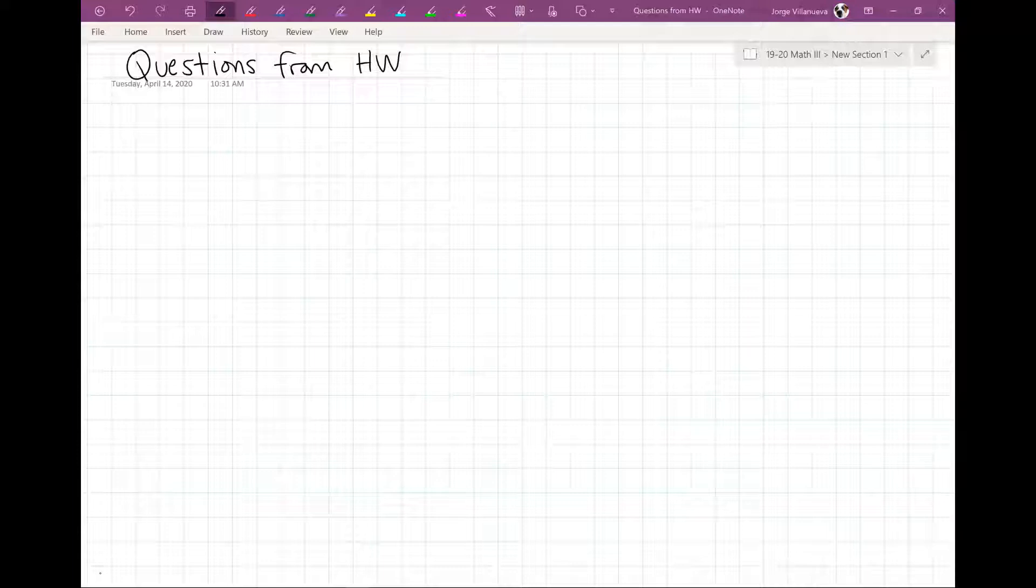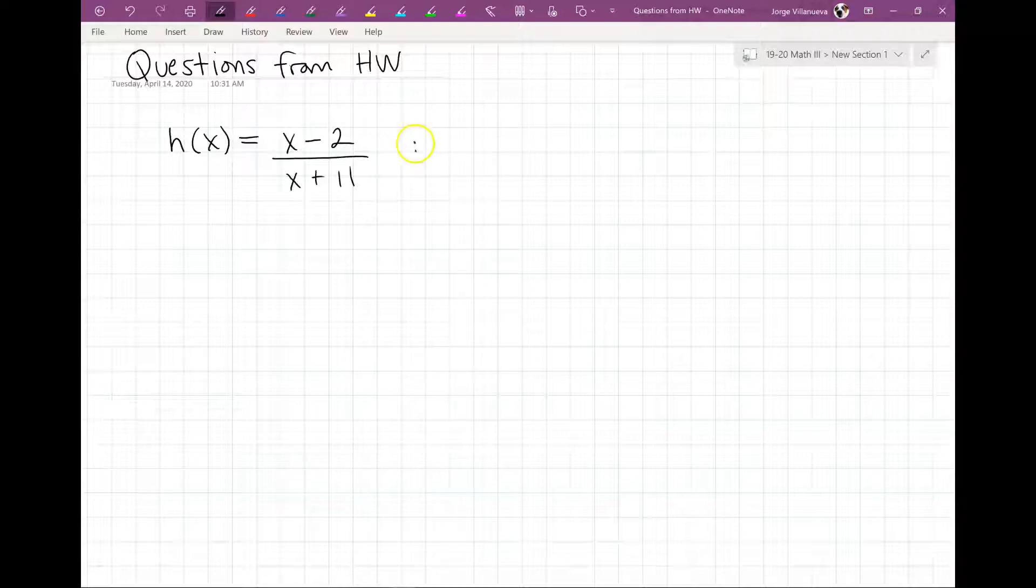So the question basically said if they give you h(x) equal to x minus 2 divided by x plus 11, they want you to find h(-7). Now what they mean by finding h(-7) is they're telling you plug in a -7 into the formula.